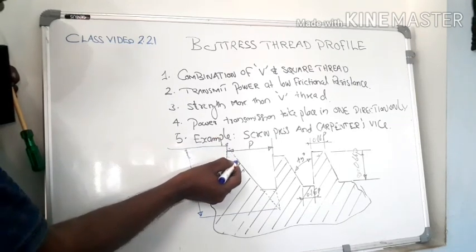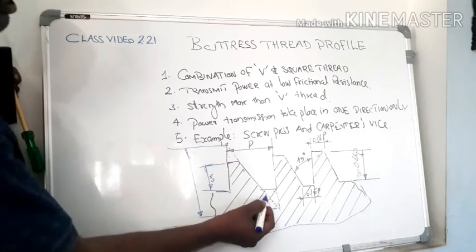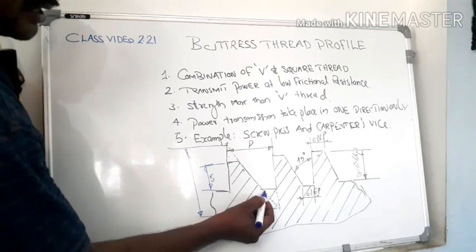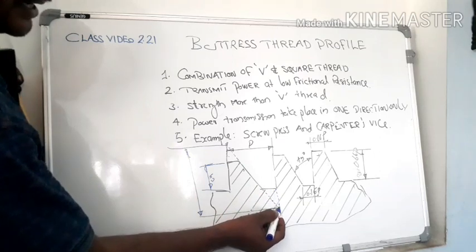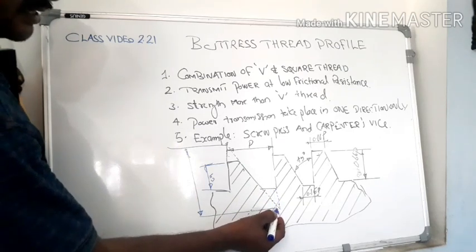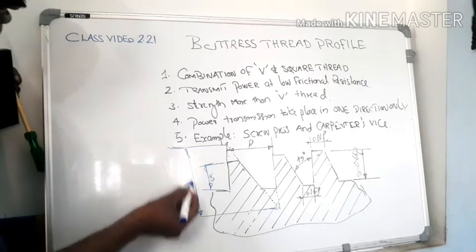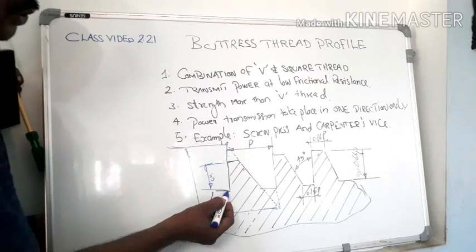Similarly, we have to draw another conical section here when it is extended downward direction. This is the imaginary height of this thread, and this is actual depth of thread.